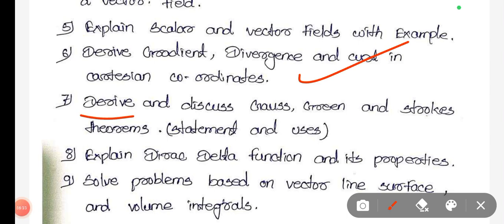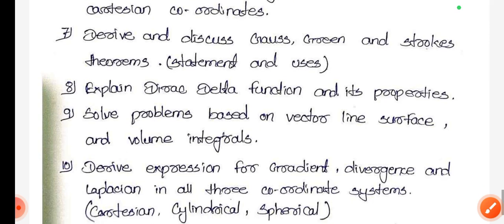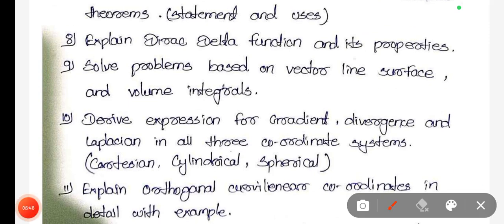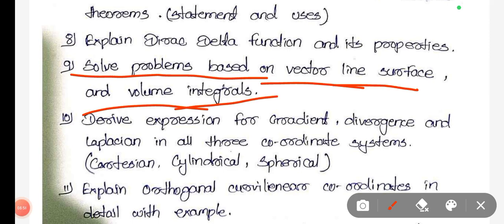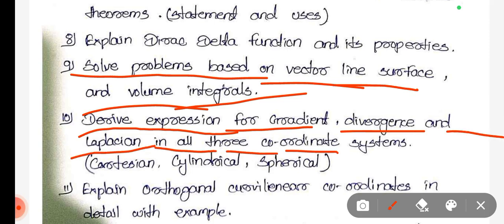Derive gradient, divergence, and curl in Cartesian coordinates. Derive and discuss Gauss, Green, and Stokes theorems. Explain the Dirac delta function and its properties. Solve problems based on vector line, surface, and volume integrals. Derive expression for gradient, divergence, and Laplacian in all three coordinate systems: Cartesian, cylindrical, and spherical.